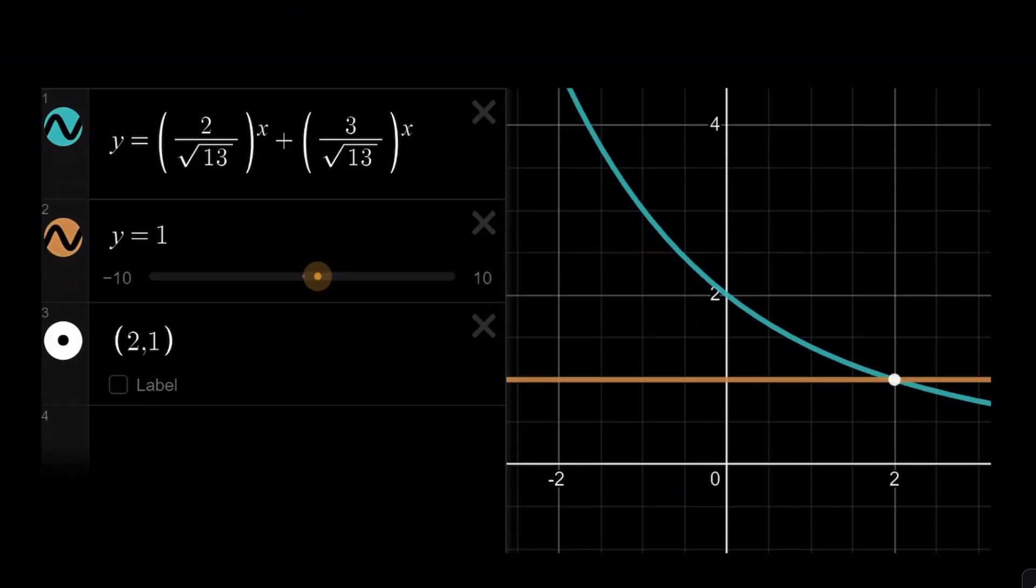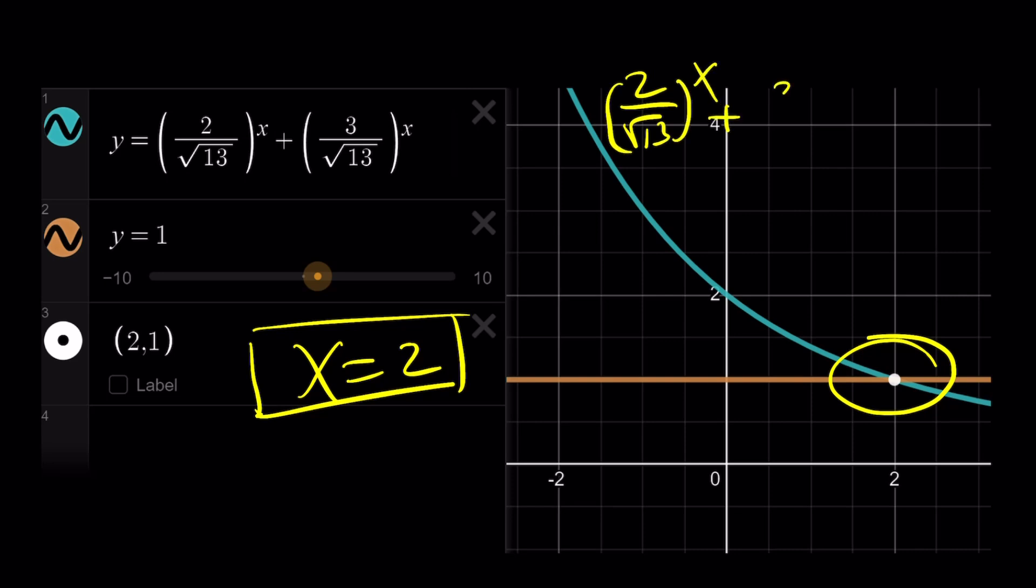Let's take a look at the graph of our function, which is decreasing. As you can see, it intersects the horizontal line at x equals 2, which is the only real solution. Can we find complex solutions? We can set this equal to 1 and write e to the power of 2 pi n i. The problem is, you're going to struggle finding the x values because these numbers are not related. It's probably impossible algebraically.